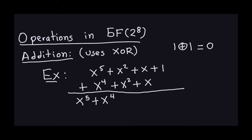Similarly for x: I have a coefficient of one and a coefficient of one, so one XOR one is zero — the x terms cancel out as well. Finally I get to the constants: I have a constant of one here and no other constant to combine with, so I just write down plus one. So the result of this addition in the Galois field is x to the fifth plus x to the fourth plus one.